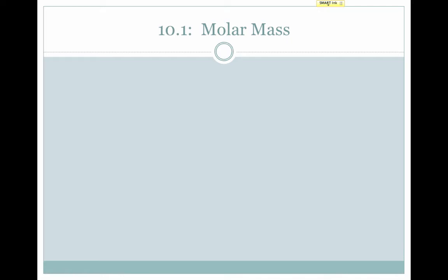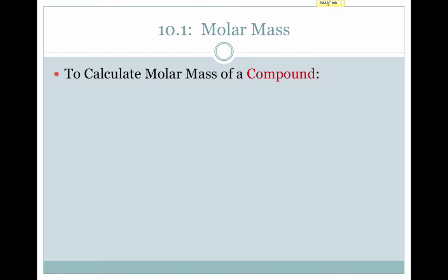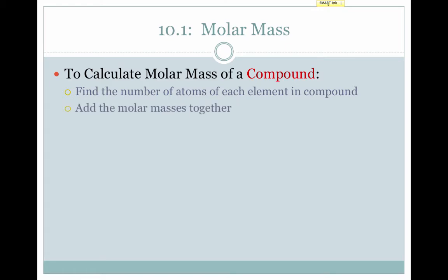What if we have a compound rather than an element? We can calculate the mass of a mole of a compound — a sample that contains atoms chemically bonded together. All you need to do is find the number of atoms of each element making up the compound and add their molar masses together. If I take the mass of a mole of you and a mole of your right shoe and a mole of your left shoe and add them together, I'll get the mass of a mole of you wearing both shoes.